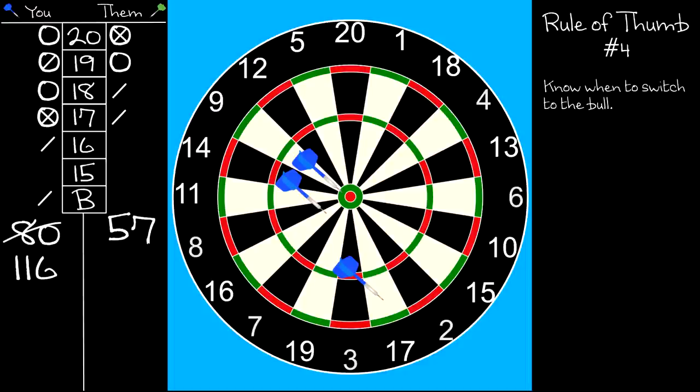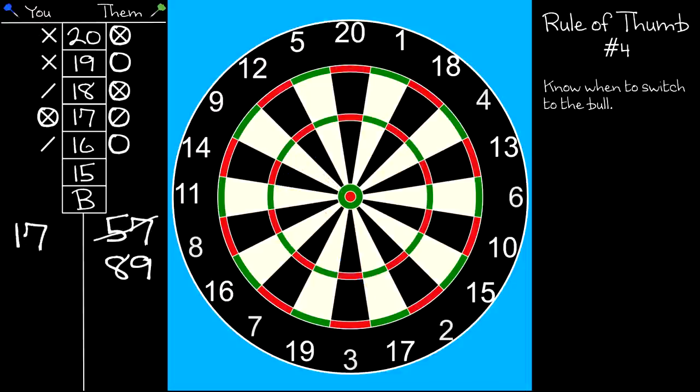Another example: consider throwing at the bull if you're way behind. Now this is a desperation measure, but if things are looking really bad for you, consider switching to the bull even with some of the other numbers still up for grabs. For example, in this game, you're way behind on points. 15 and bull are the only numbers left for you to score on, and your opponent is scoring on 20, 19, 18, and 16. You're probably going to lose, but if you can hit two or three bulls and maybe slop one of the numbers you need, you're still not out of the woods, but you've given your opponent something to think about.